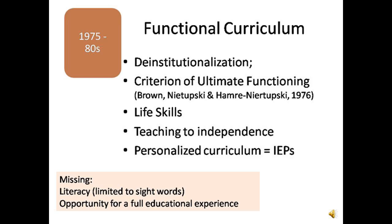In 1976, Brown, Napetsky, and Hammering Napetsky wrote a document called The Criteria of Ultimate Functioning. This paper has become a seminal piece of literature in the field of special education, promoting the inclusion of persons with severe disabilities to the community. This paper rejects the idea of institutions and demands that all people with disabilities be included and prepared for a world that they need to be a part of. If you're interested in reading this paper, you can find a link to it via the web in the resource list of this module.